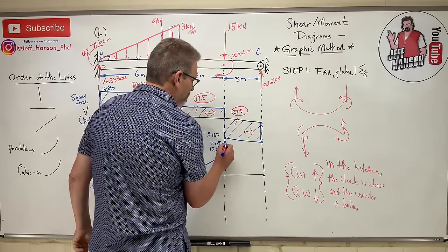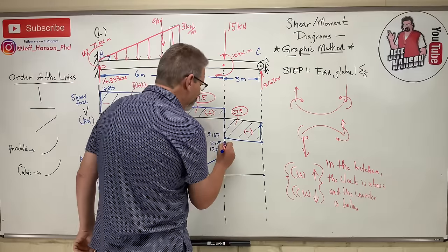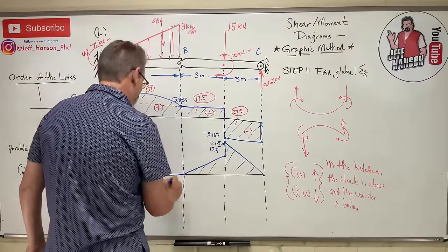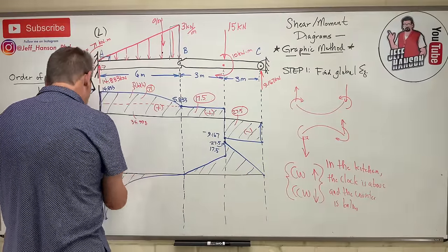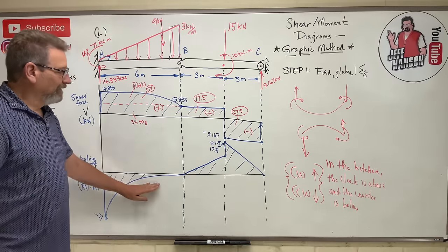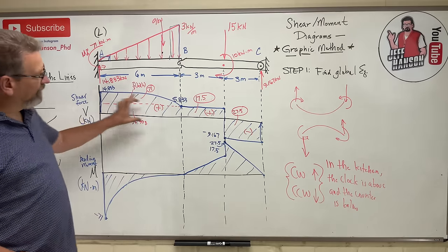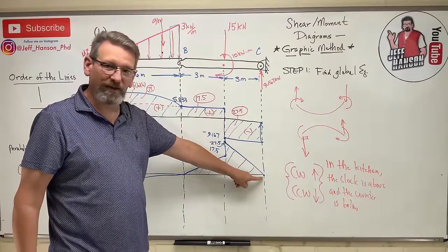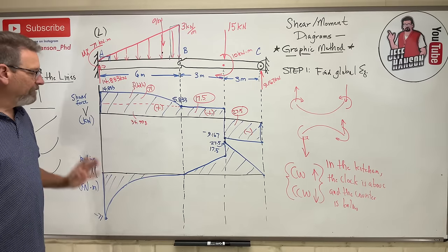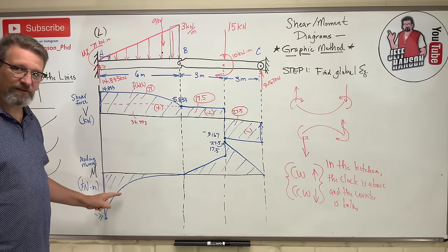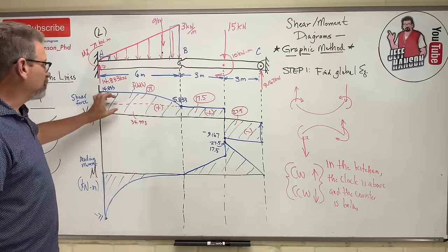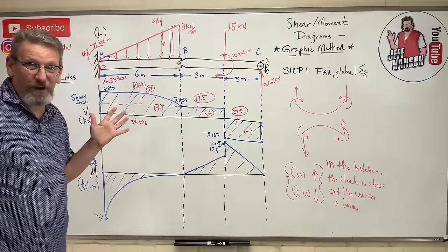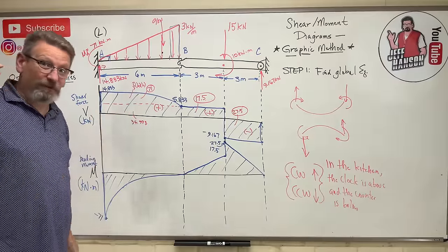Then there's the 10 kN·m concentrated moment — clockwise, so jump up — adding 10 to reach 27.5 kN·m. Then downhill 27.5 kN·m to return to zero at C. John Denver moment — take me home! Always, always get back to zero on your M diagram too. The most common mistake is getting the inflection direction wrong — just remember fast then slow or slow then fast. That's your shear-moment diagram complete!